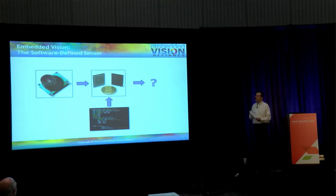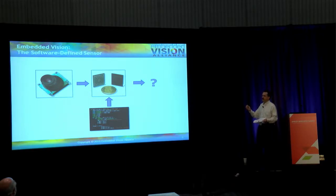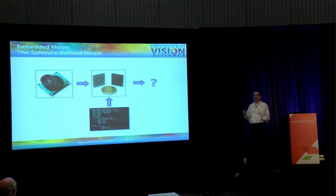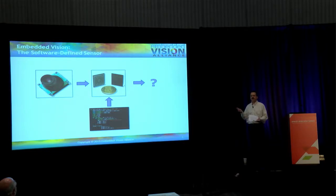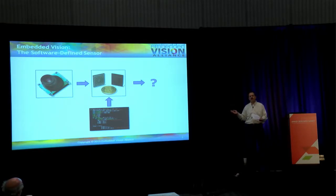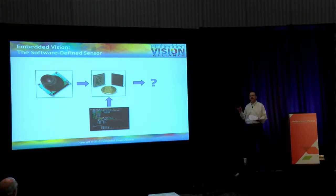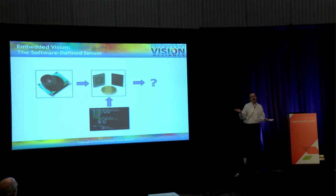Another way to think about the generality of vision is to recognize that the essential hardware components — the sensor and the programmable processor — are very general components. If you have those components in a system, like a smartphone today — every smartphone has a powerful application processor and one or more image sensors — the hardware is not specific to one particular vision function like face recognition or gesture recognition. It's the software implementing the algorithms that provides the specific functionality. In a way, a vision system like this is a software-defined sensor. It's extremely flexible and can be programmed to do lots of different things.